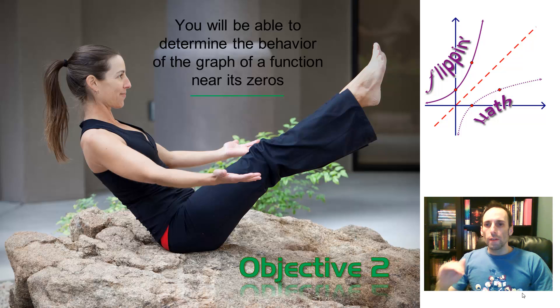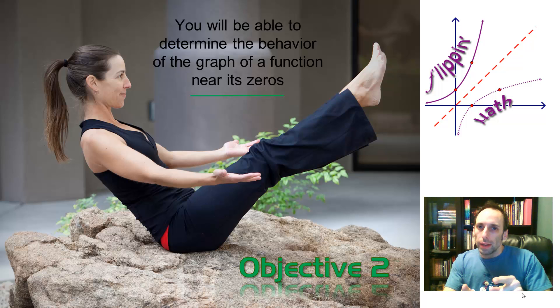All right, we've been talking about the fundamental theorem of algebra and this whole thing of if there's nth degree, there's n solutions. Sometimes they repeat, and that's called multiplicity, so we're going to look at when they do repeat and even if they don't, what's the graph look like around those zeros?